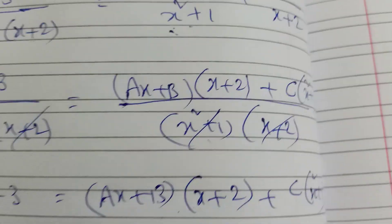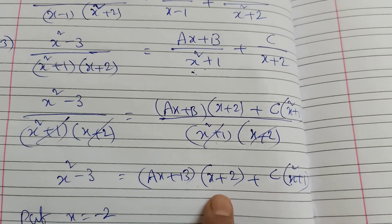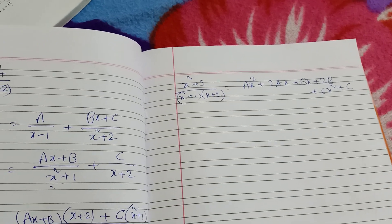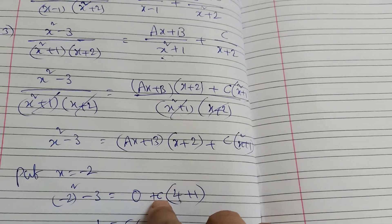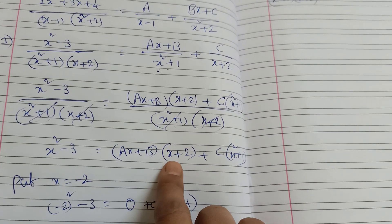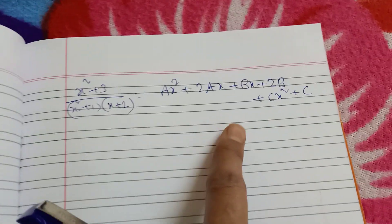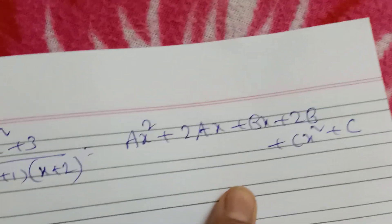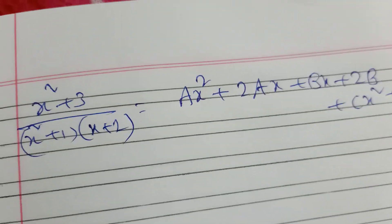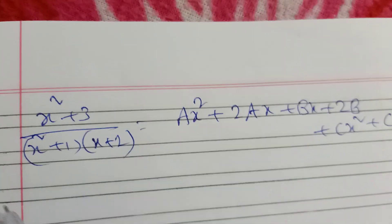Now we expand (ax plus b) into (x plus 2): this gives ax squared plus 2ax plus bx plus 2b, plus c of (x squared plus 1). So: ax squared plus 2ax plus bx plus 2b plus cx squared plus c.